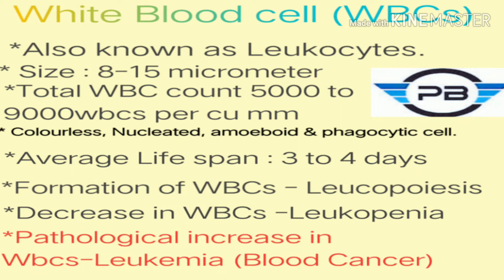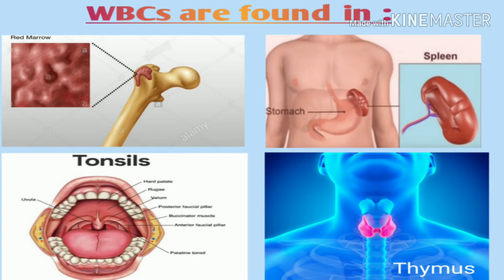White blood cells destroy useless cells through lysosomes. The average lifespan of WBCs is 3 to 4 days, after which they are destroyed by lysosomes. The formation of WBCs is called leukopoiesis, and the decrease in WBC count is called leukopenia. A pathological increase in WBCs results in leukemia, also known as blood cancer.